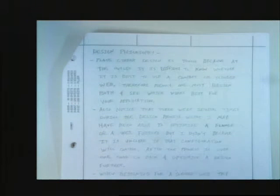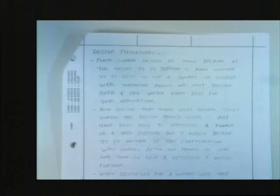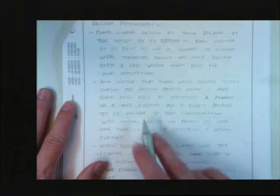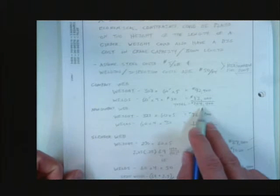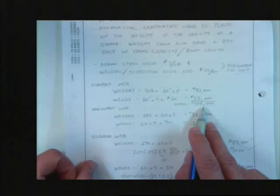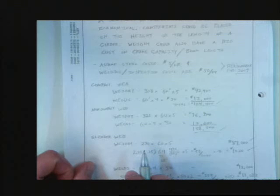So, when you add this up, this ends up being the most costly of all. So, compact web is most economical. What? The one that took me one page to design was the most economical. But I didn't know that until I went to the other hellacious seven pages. Right? Okay. Design philosophy. Plate girder design is tough. Because at the offset, it's difficult to know whether it's best to use compact or slender web. It's hard to know. Therefore, really, one must design both and see which one works best for your application.